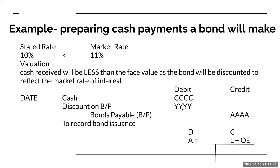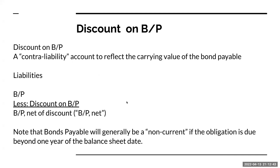Discount on bonds payable is what we call a contra liability account. On the balance sheet, I'm going to have bonds payable less the discount on bonds payable — we subtract rather than add — which gives me bonds payable net of that discount. Again, bonds payable is going to be a non-current liability if the obligation is due beyond one year from the balance sheet date.